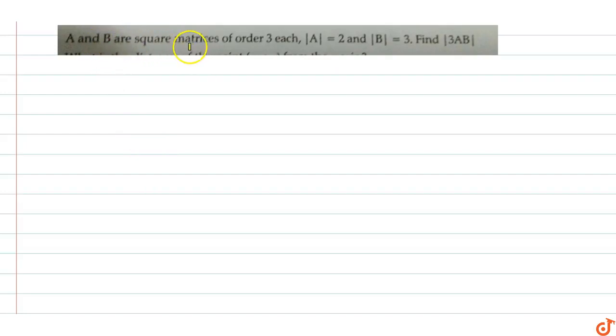In this question, A and B are two square matrices of order 3 each, and |A| (the determinant value of A) is 2, and the determinant value of B equals 3. Then find the value of |3AB|. So |3AB| equals